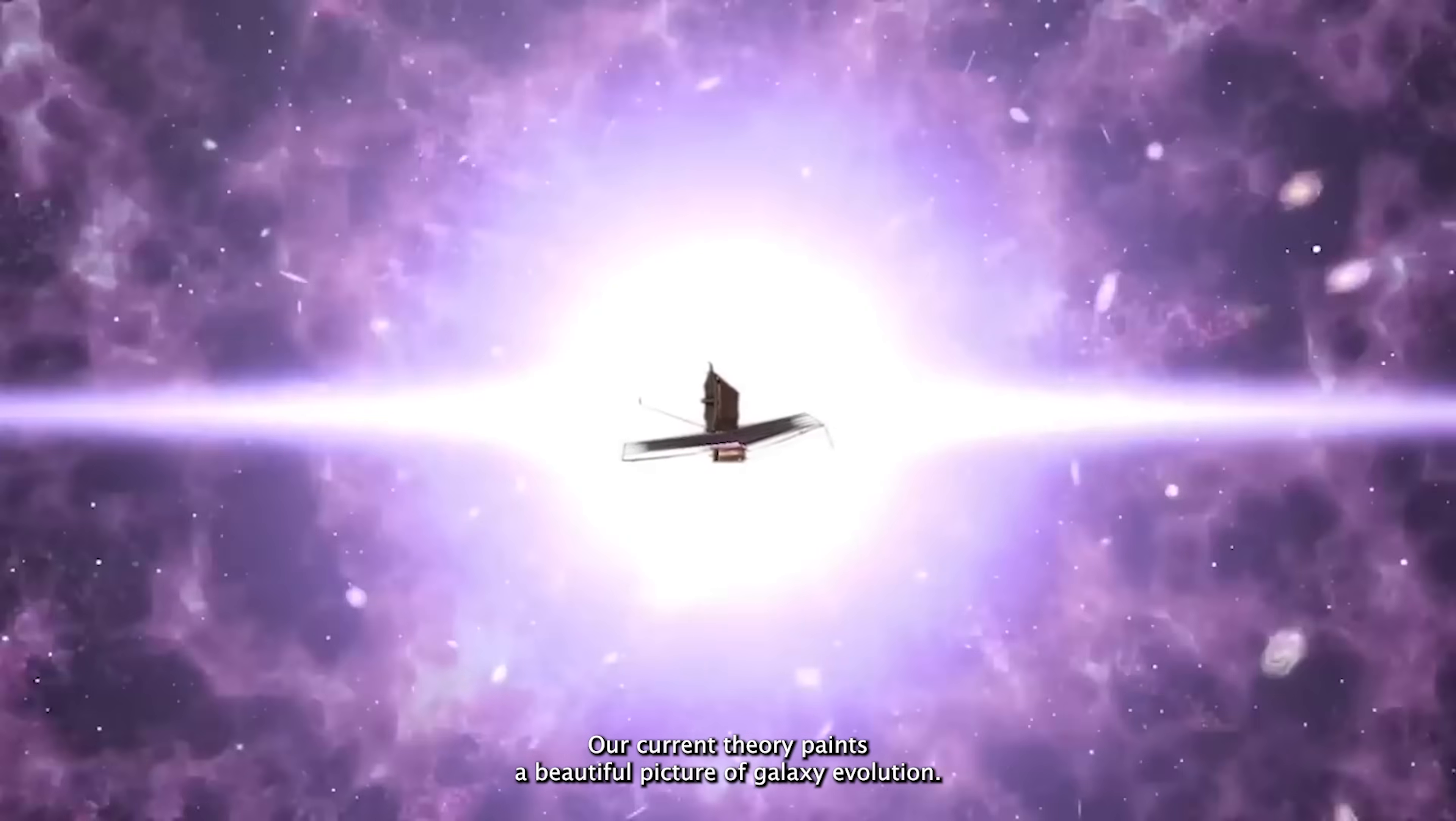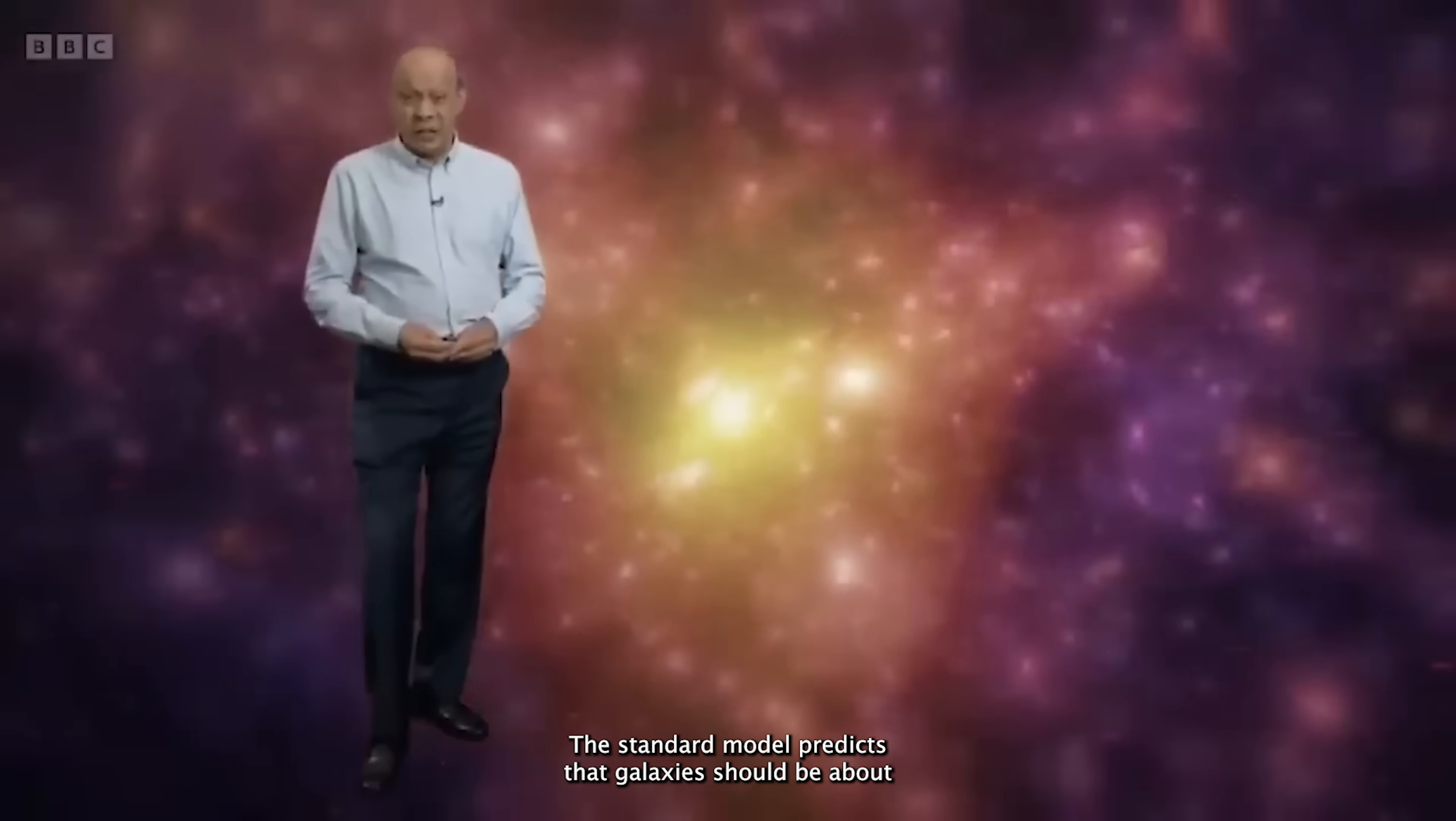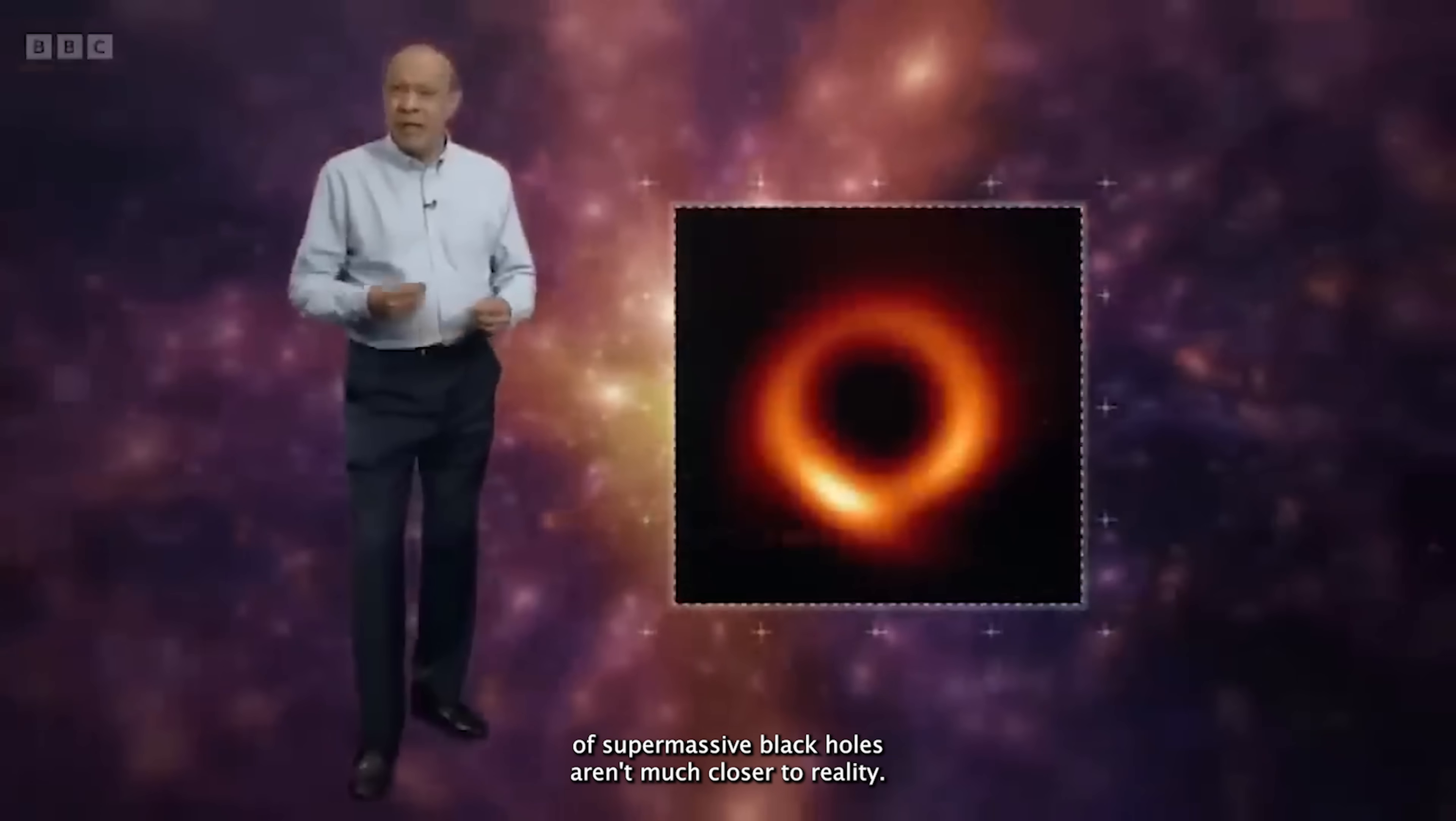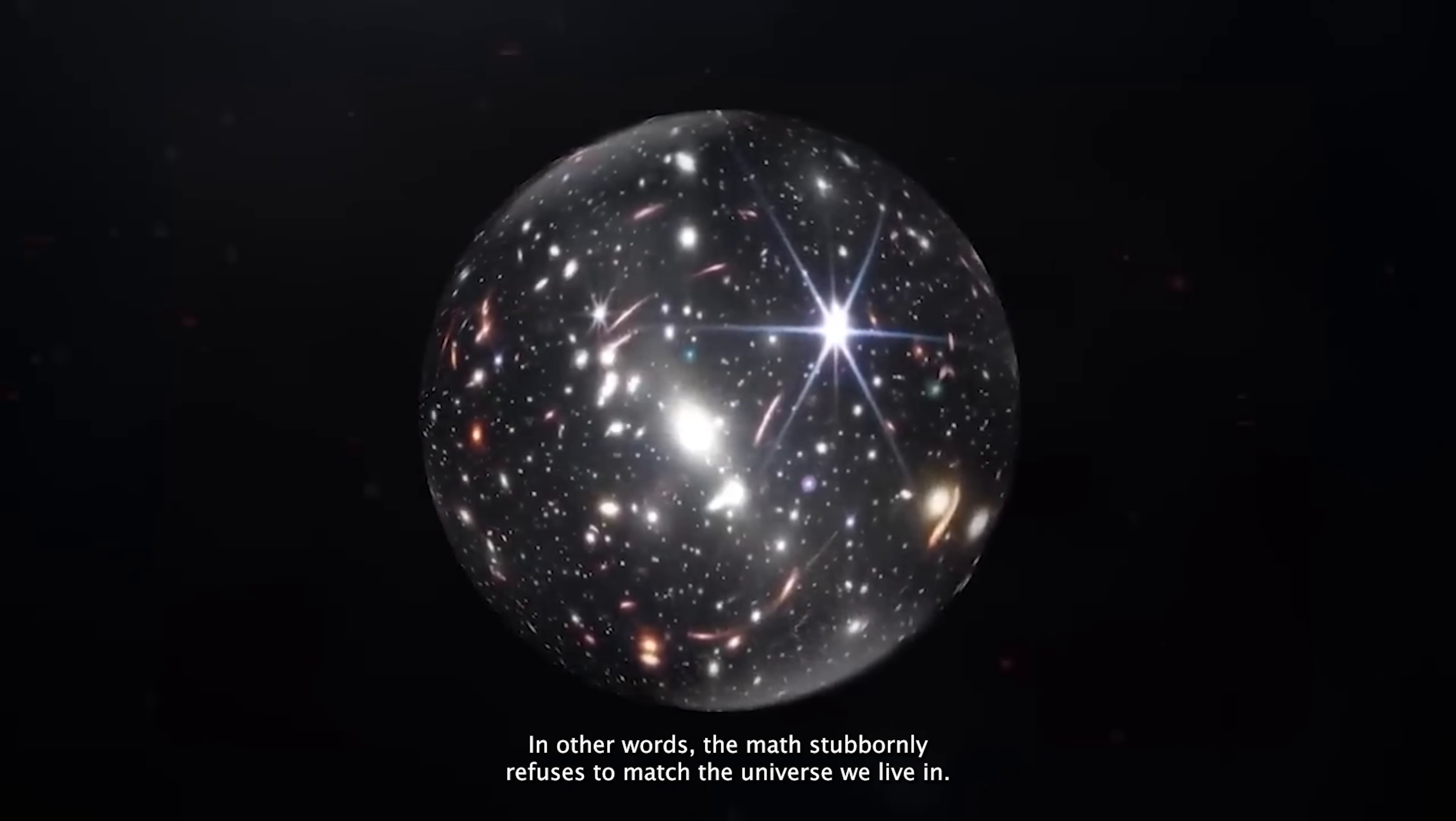Our current theory paints a beautiful picture of galaxy evolution, but beneath the elegance lies a brewing contradiction. The standard model predicts that galaxies should be about 7% more tightly clustered than what we actually observe. Even the new, highly detailed simulations, which factor in the violent influence of supermassive black holes, aren't much closer to reality. They still overestimate the clumpiness by around 5%. In other words, the math stubbornly refuses to match the universe we live in.